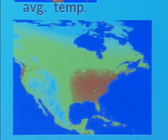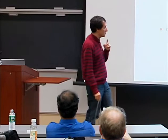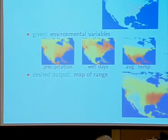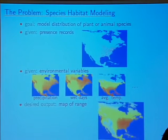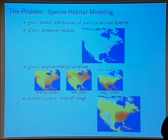An audience member asks whether the environmental variables could include presence records of another species, like a predator. These are things that biologists have gathered and identified as being useful. In principle, you could use information from another species, but using presence records from another species doesn't fit mathematically into our model as we'll see in a bit, though you could probably adapt it.